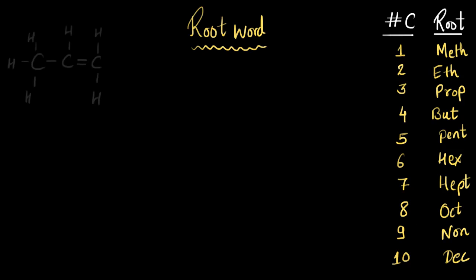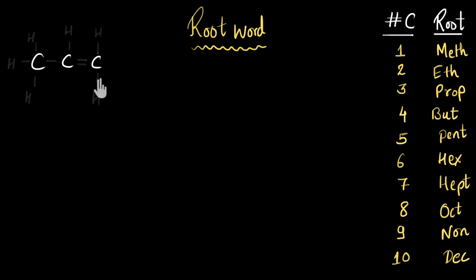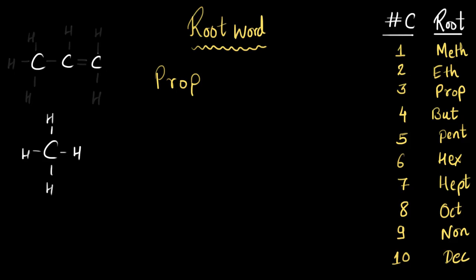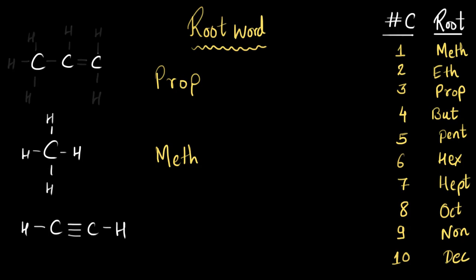For example, if I had this molecule to name, I focus only on the carbon atoms. I see there are three carbon atoms, so I use the root word 'prop.' For another example — pause and guess — this one has only one carbon atom, so we use the root word 'meth.' And for a molecule with two carbon atoms, we use the root word 'eth.'